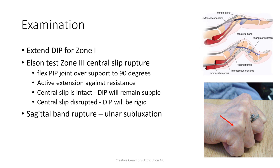In examination of the tendon it is very important to understand the anatomy. I'd like to spend a little time on the Elson test. This is basically looking for central slip injuries over the PIP joint in the dorsum of the hand. The way to do that is to support the proximal phalanx and let the patient flex the PIP joint to 90 degrees, then provide resistance at the middle phalanx and ask the patient to extend. If the patient's central slip is intact, the distal interphalangeal joint will be supple because the patient is not recruiting the lateral bands to try to produce flexion of the PIP.